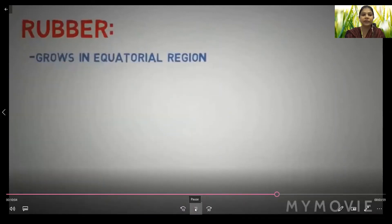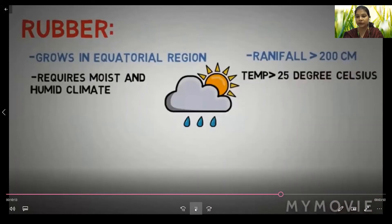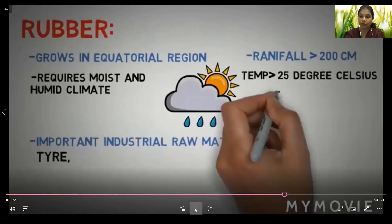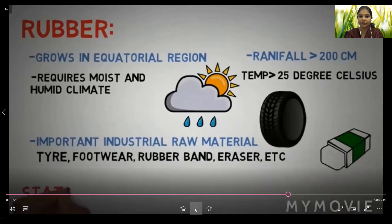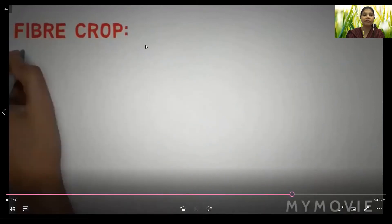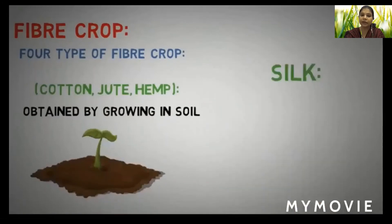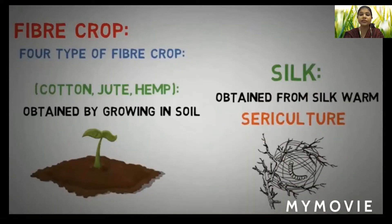Now let us look at the non-food crops of India. Rubber grows in equatorial regions requiring moist and humid climate with rainfall of more than 200 centimeters and temperature above 25 degrees Celsius. It is an important industrial raw material used to make tires, footwear, rubber bands, erasers, etc. States where rubber grows include Kerala, Tamil Nadu, and Karnataka.